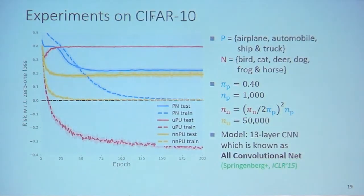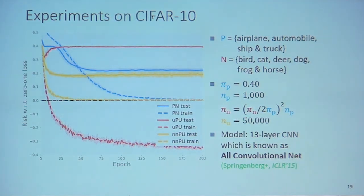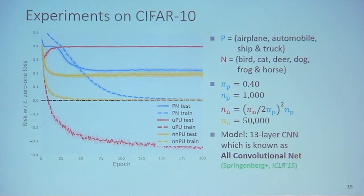On CIFAR-10, we want to separate four classes from six classes. The number of training data are similar to the previous experiment. We use the 13-layer convolutional neural network known as the all-convolutional neural net, which is one of the best models for CIFAR-10 in supervised learning. We observe a similar phenomenon: non-negative PU learning successfully fixes unbiased PU learning and further improves performance over supervised learning.